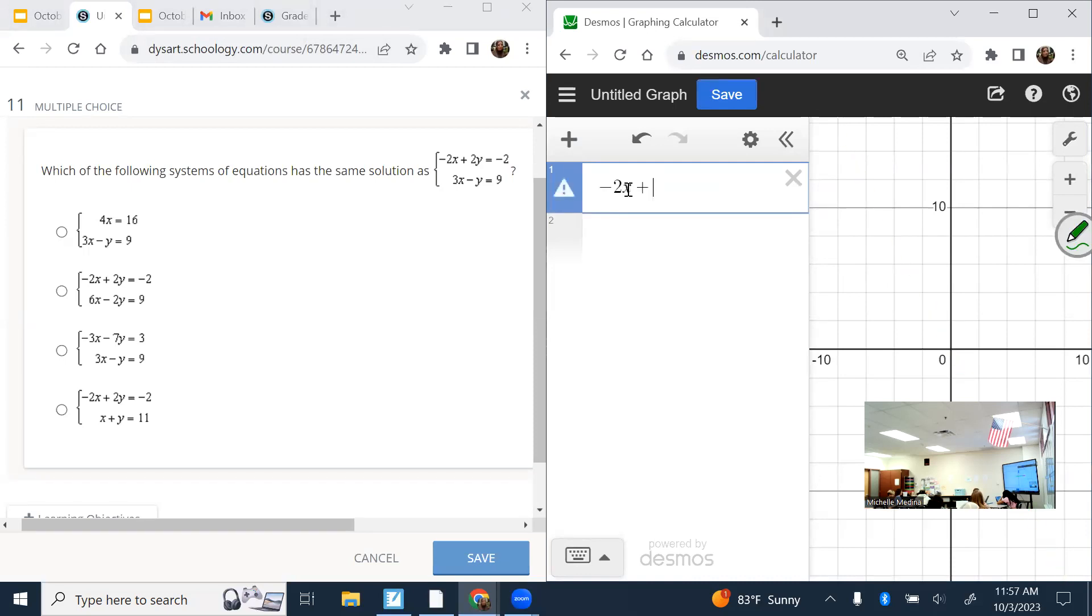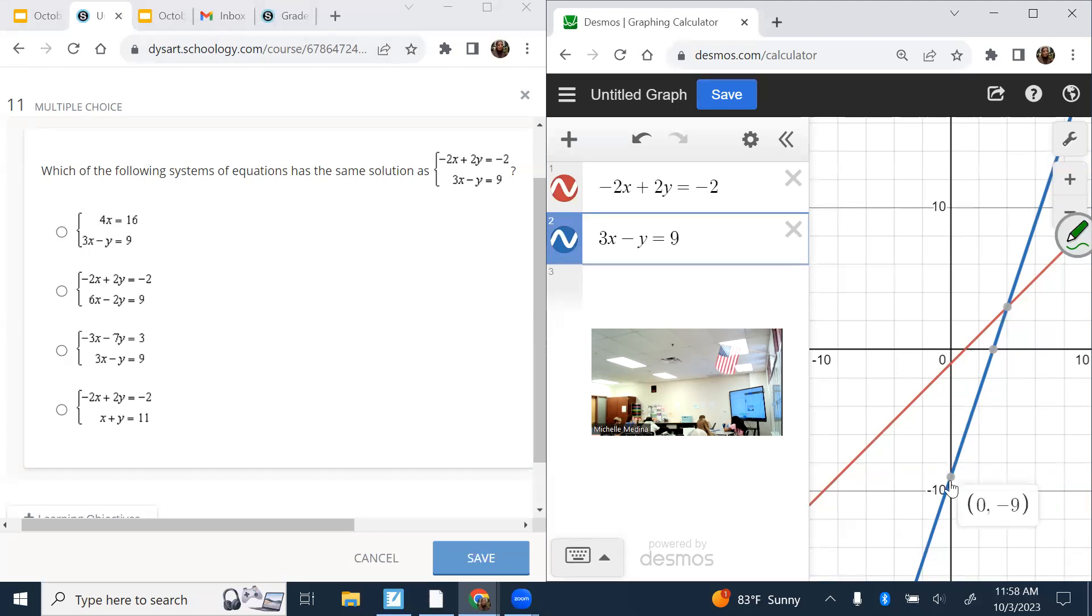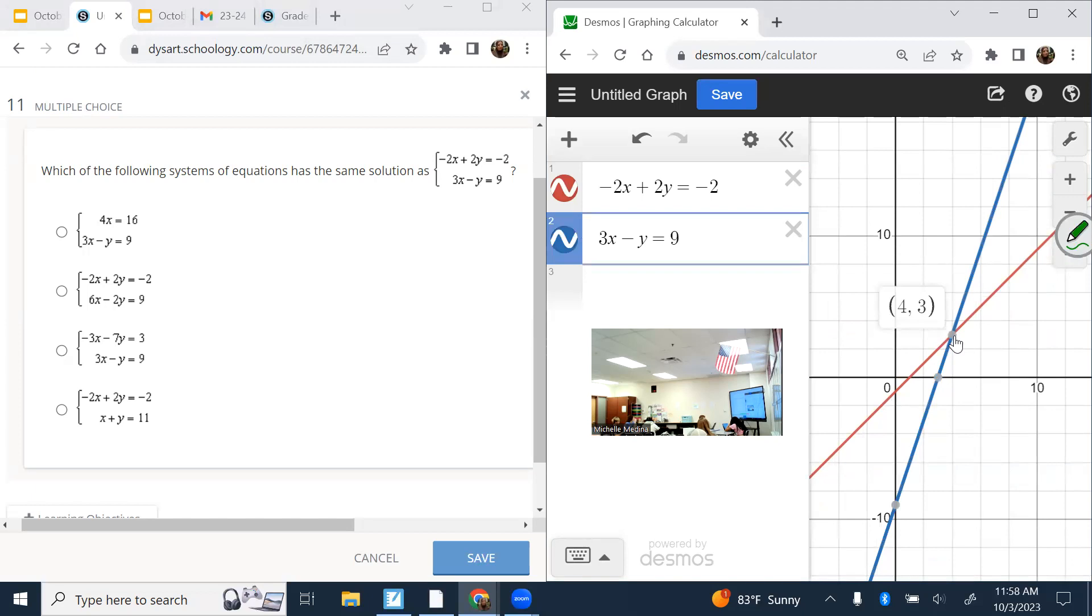First, we need to figure out what that solution is. So to do that, you type it in. It does not have to be rearranged to slope intercept form, which is nice. You type it in exactly how it looks. If they use something other than x and y, you just need to change it to x and y. Desmos will only read x's and y's. And then in another row, type in your other equation. How do I know where my solution is? Where would my solution be? Where they intersect would be your solution to the system. So it looks like this one has a solution of 4 comma negative 3. I'm just labeling it so I remember it.